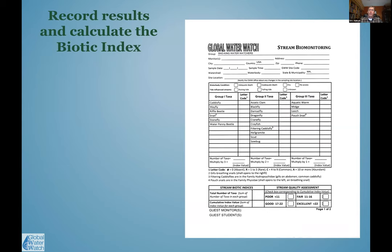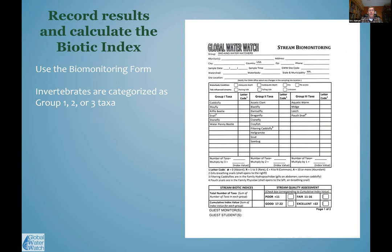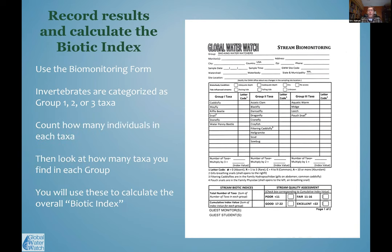We then record results on the biomonitoring form, which is divided into Group 1, Group 2, and Group 3. We record whether we found organisms in each category — for example, certain caddisfly types or mayflies — and count the amount found in each. We're mainly determining whether we found something in a given taxa category. There's weighting depending on how many Group 1, 2, or 3 organisms were found.